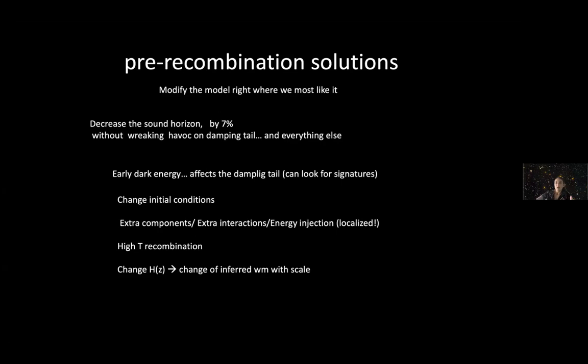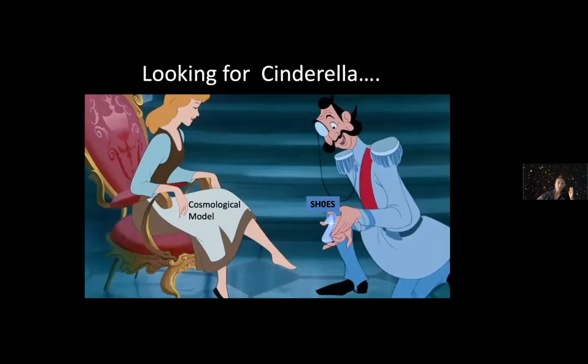There have been a lot of papers working on pre-recombination solutions. We need to decrease the sound horizon by 7% without breaking havoc in the damping tail of the CMB. Here are suggestions: early dark energy, change of initial conditions, extra components, extra interactions, energy injection, high temperature recombination. Despite not being palatable, these are not all equivalent, so next generation data will tell you which one it is or will rule them all out. Since my time is up, if we decide we have to look for a model, we are still looking for Cinderella.